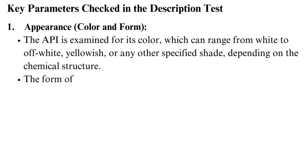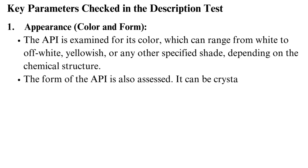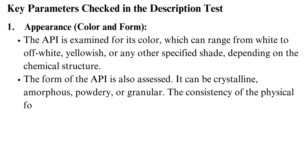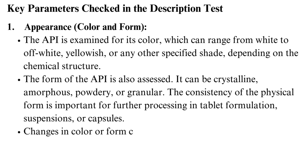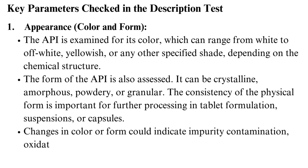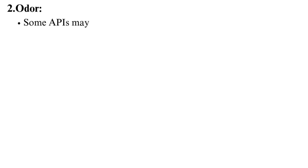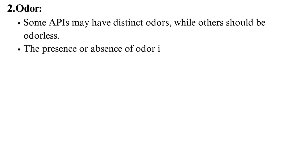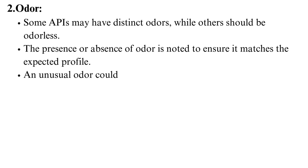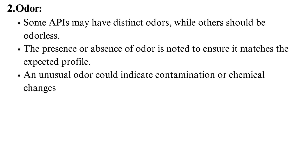The form of the API is also assessed. It can be crystalline, amorphous, powdery, or granular. The consistency of the physical form is important for further processing in tablet formulation, suspensions, or capsules. Changes in color or form could indicate impurity contamination, oxidation, or degradation of the API. Some APIs may have distinct odors, while others should be odorless. The presence or absence of odor is noted to ensure it matches the expected profile. An unusual odor could indicate contamination or chemical changes.